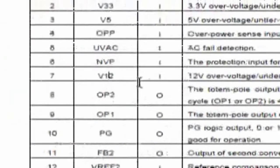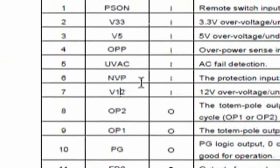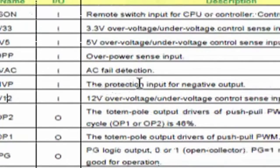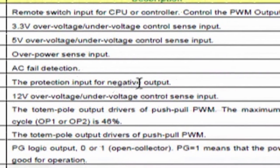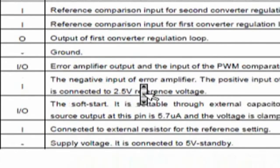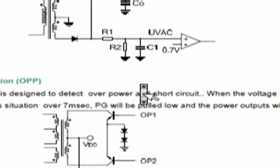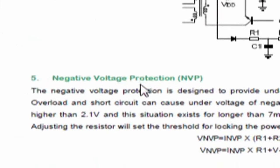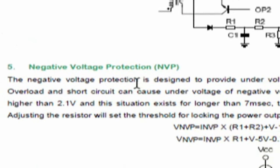We are back at the datasheet, and here you can see pin number six is NVP, which says the protection input for negative output. So what does that exactly mean? Within the datasheet itself I found what it is: negative voltage protection, NVP.